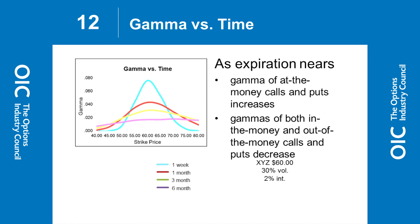Gamma versus time speaks to the subject matter of today's presentation: weeklies, monthlies, and leaps. Notice the light blue line – that's one week. As the underlying moves close to expiration, deltas change significantly, and because deltas change, those gamma numbers are pretty significant. The further out you go in time, things smooth out. As we get into the weeklies, we'll focus on this whole idea of gamma and changing deltas.